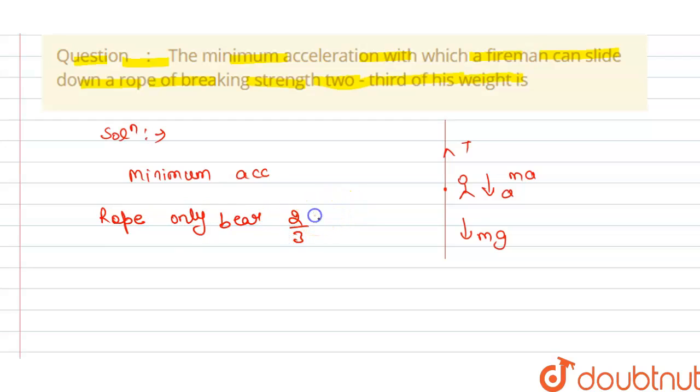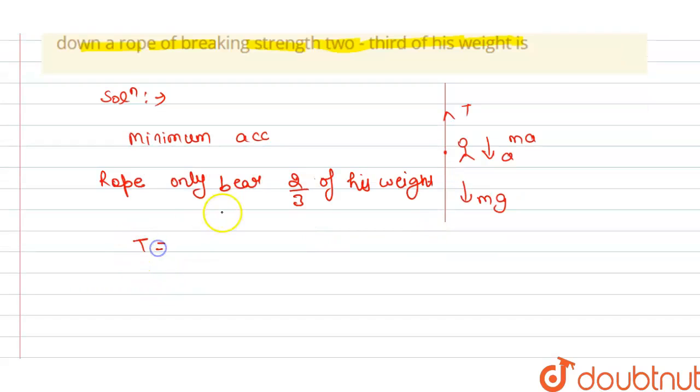So in this condition our tension will become equal to T equals m into g minus a, that is the breaking strength.